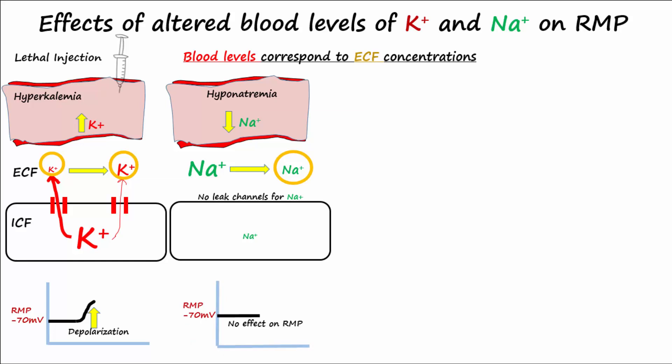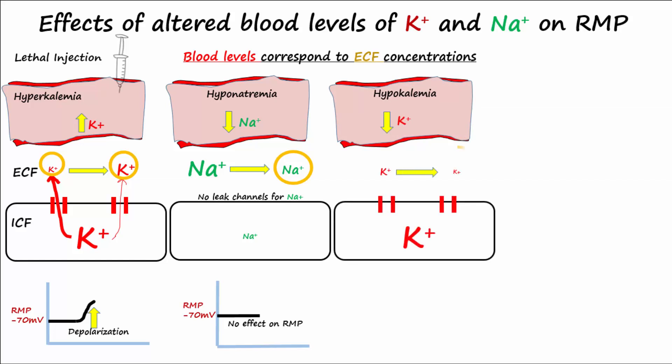What about hypokalemia? This would also mean lower levels of potassium in the ECF. This lower level of potassium in the ECF would increase the concentration difference between the inside of the cell and the outside, so potassium would want to go out more. Greater potential for potassium to leave would cause hyperpolarization.